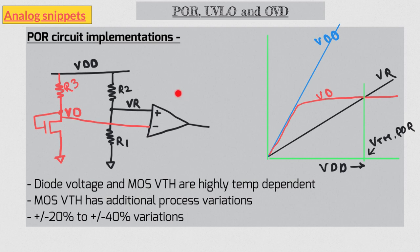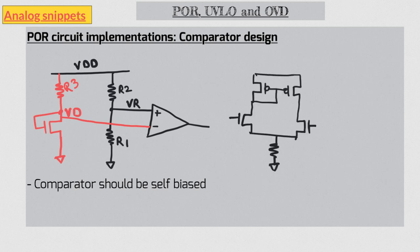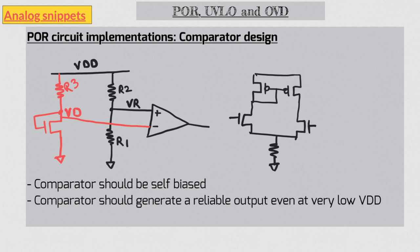Let's now talk about the design of this comparator. First of all, this comparator should be able to generate its own bias. A commonly used technique is to use a resistor in place of current bias. A resistor, being a passive element, generates current even if there is a very small voltage difference across it. Now this comparator is supplied by the input supply itself, so at low supply values this comparator may not be operational at all. So there should be a way to generate a very reliable output even at very low supplies. Resistors again come to the rescue here.